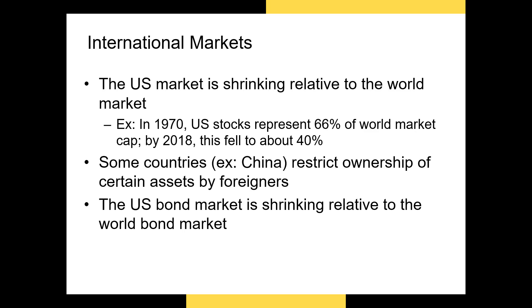Now let's look outside of the United States. As a result of the rest of the world modernizing, the size of the U.S. markets relative to world markets has fallen. In 1970, the total market cap of all stocks on U.S. stock exchanges represented about 66% of total world market cap. By the end of last year, this had fallen to approximately 40%. This number will likely continue to fall as more countries create stock exchanges and countries like India and Ethiopia see rapid modernization.